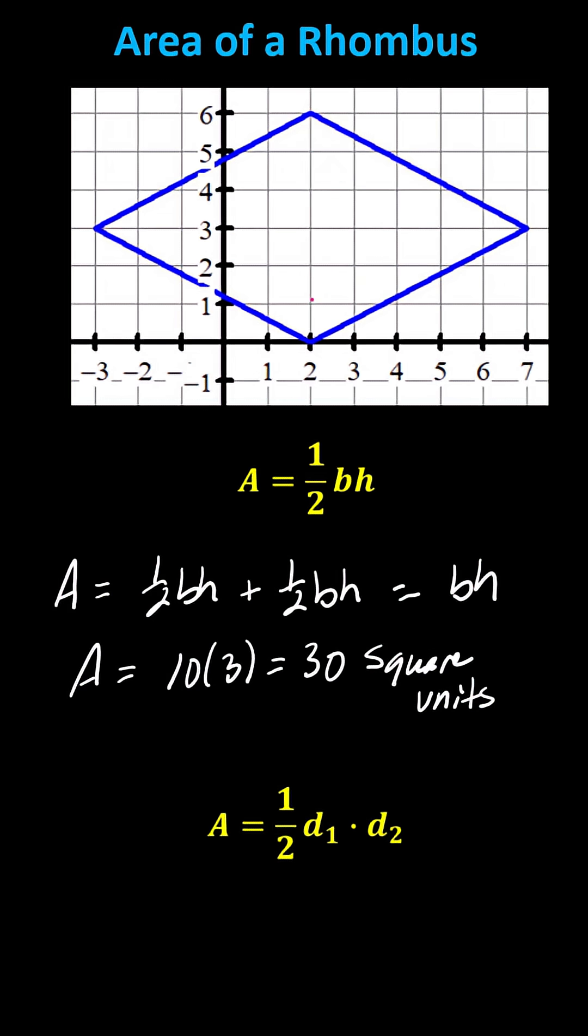To form the two diagonals, we connect the opposite vertices. Here is one diagonal, and here is the other. We already know the longer diagonal has a length of 10 units. The length of the shorter diagonal is six units.